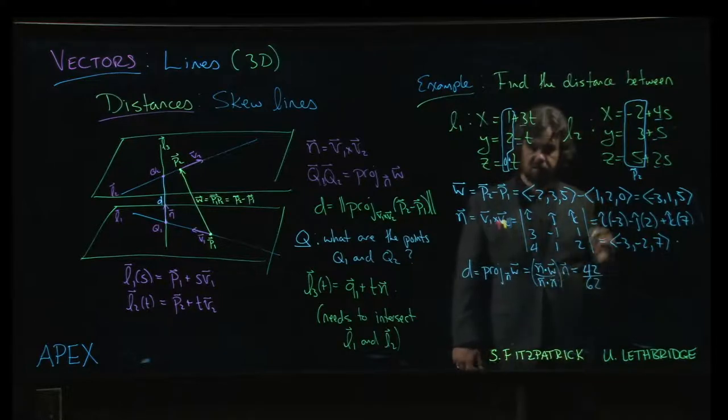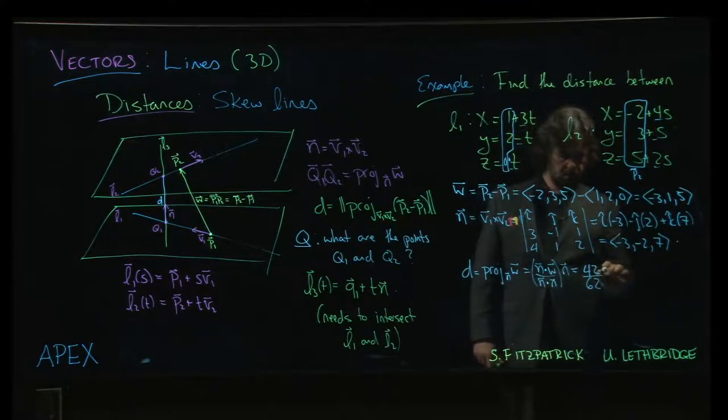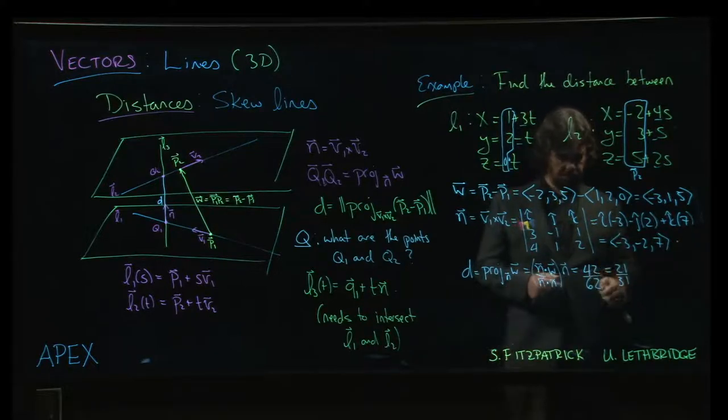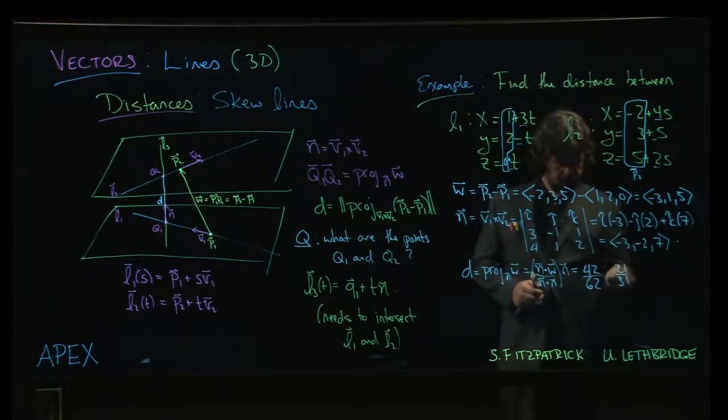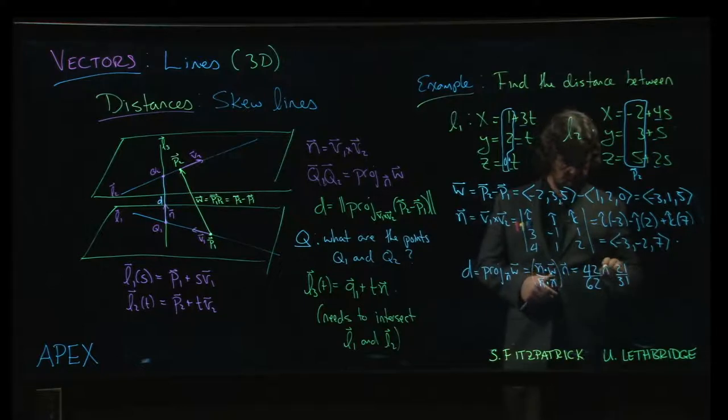Yeah, 42 over 62, or if we like, 21 over 31. Oh, times the vector of course. Times n.